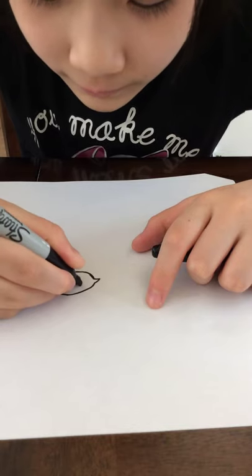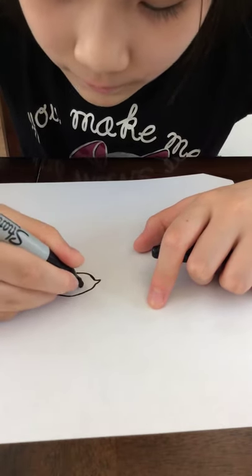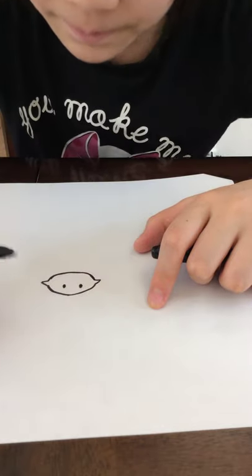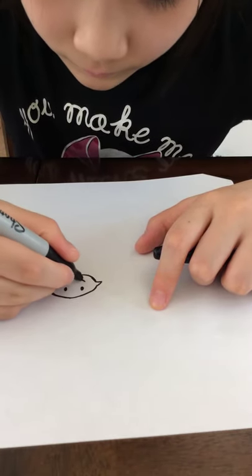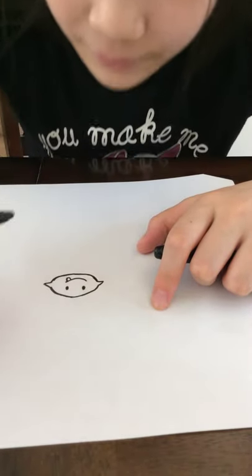And then I'm going to draw little eyes, like oval shaped. And you can draw a little tongue sticking out if you want.